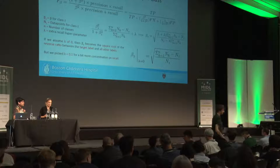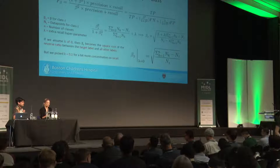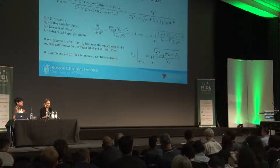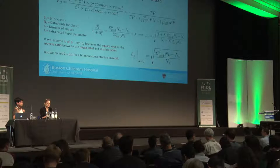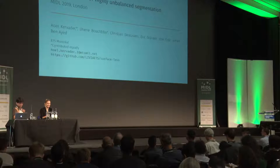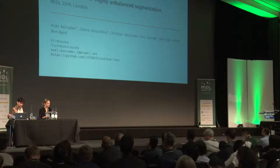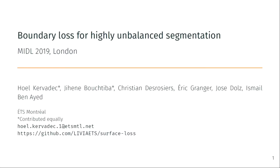The next paper was actually the runner-up for the best paper award. It has a nice, efficient title: Boundary Loss for Highly Unbalanced Segmentation, and it will be presented by Joel Kervedek.